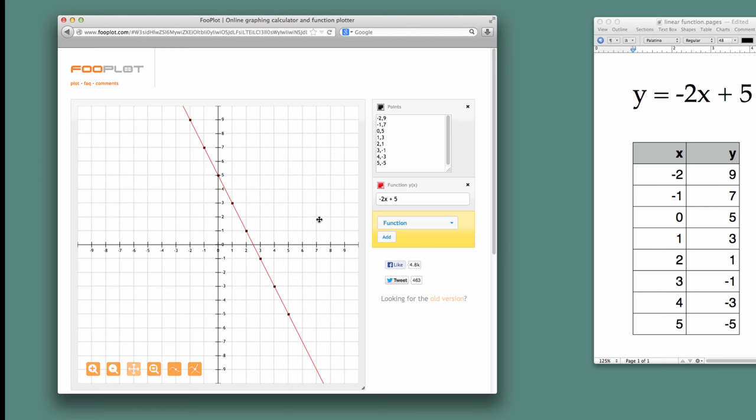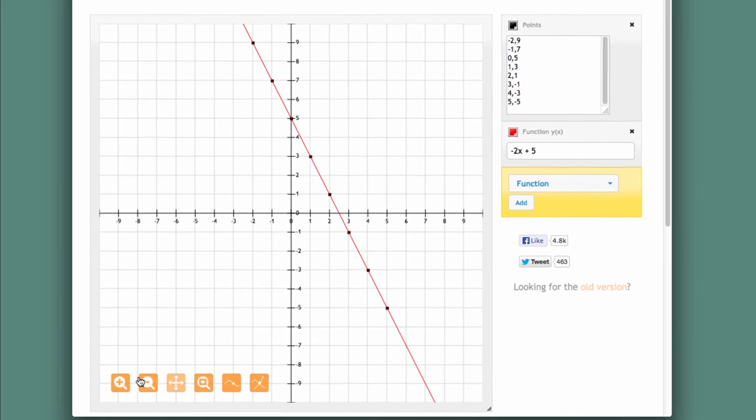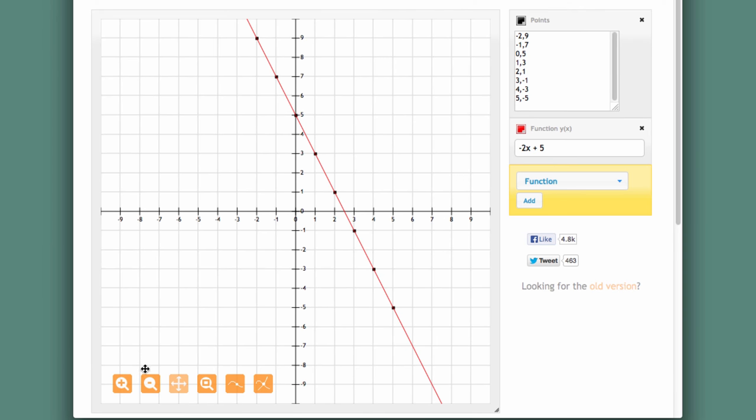Another thing I'd like to show you with FooPlot is that if you hover your mouse over the graph, you'll see that these little orange controls show up. And if you move your mouse over each of those, there's specific little functions each does. I want you to look at the trace command. If I click on that, the cursor turns into cross arrows. And then I can click on the graph. And there's a little orange square that shows up. And as I move this along, you can see it stops on my points. We've entered 4, minus 3, and that's there. But also it puts in all the points in between.